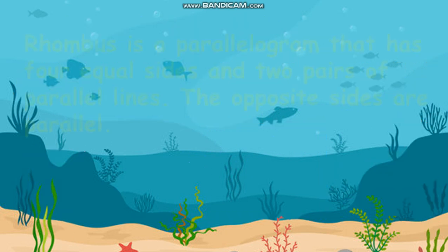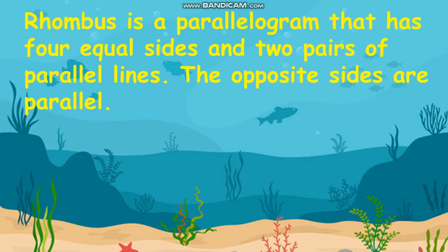Another one is a rhombus. It is a parallelogram that has four equal sides and two pairs of parallel lines. The opposite sides are parallel.